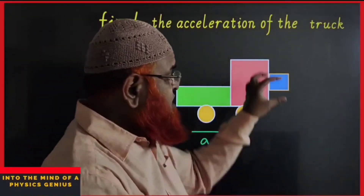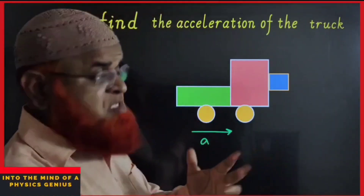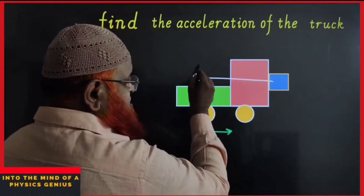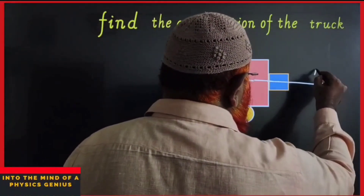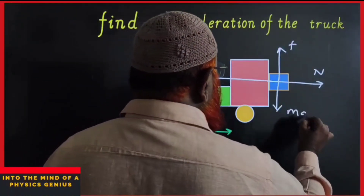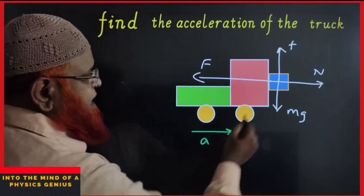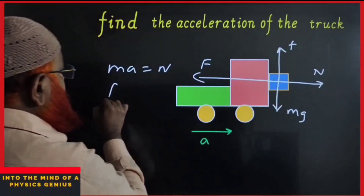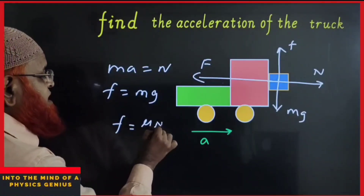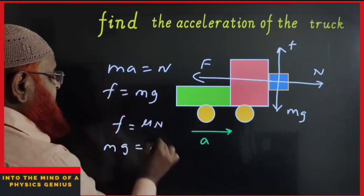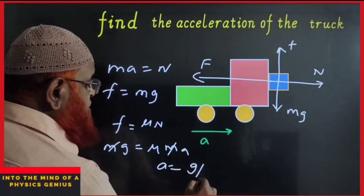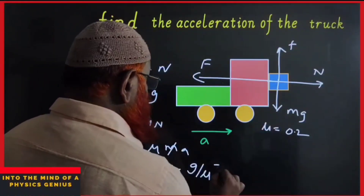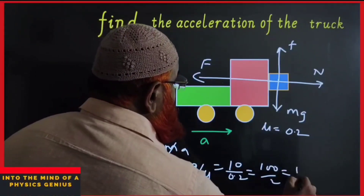Find the minimum acceleration of a truck so that a block attached to its front will not skid down. The truck's acceleration acts as a pseudo force in the opposite direction. Forces on the block: pseudo force ma (horizontal), normal reaction N, friction upward, and mg downward. Setting friction = mg and N = ma, with friction = μN: μma = mg, so m cancels and acceleration = g/μ. For μ = 0.2: a = 10/0.2 = 50 m/s².